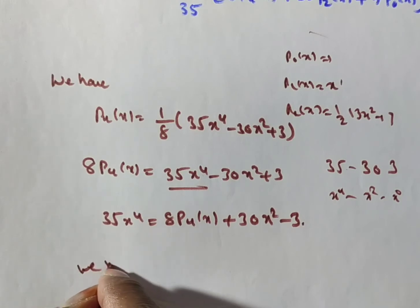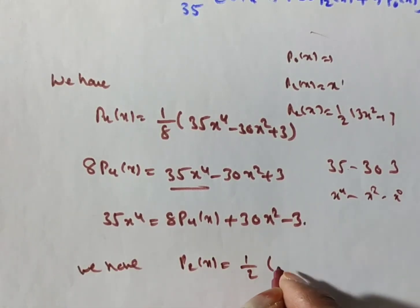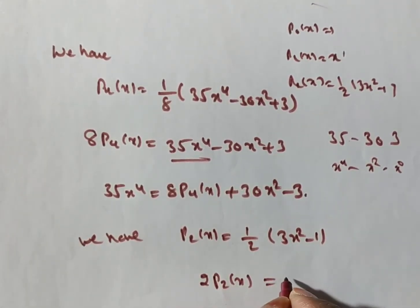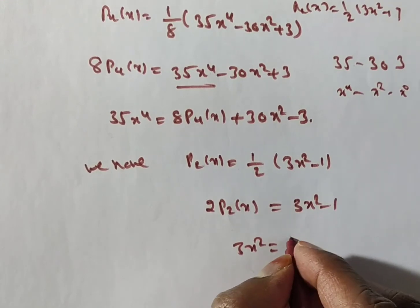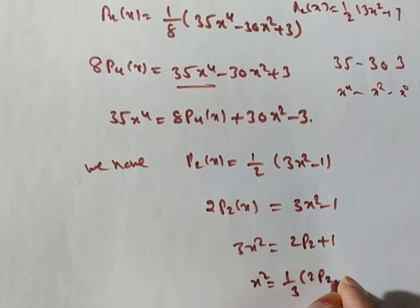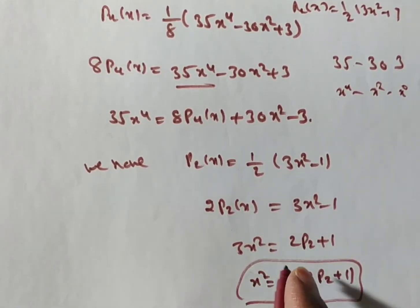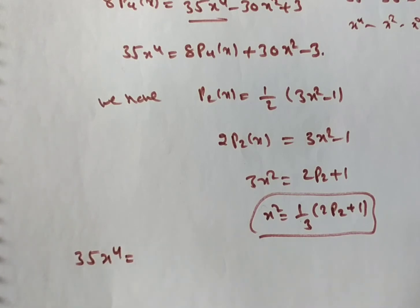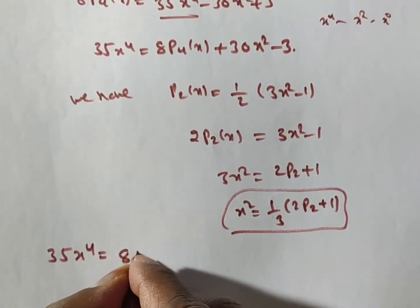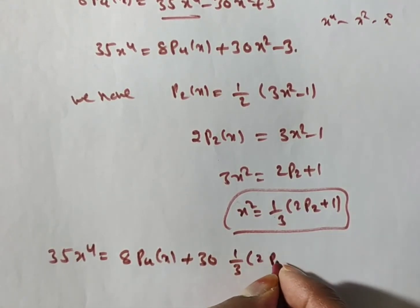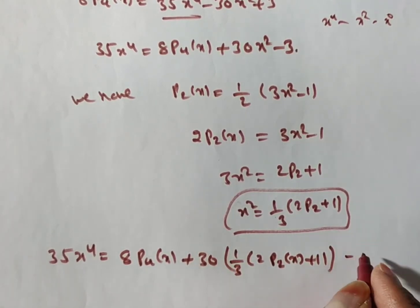Since x² appears, we need P₂(x). We have P₂(x) = (1/2)(3x² - 1), so 2P₂(x) = 3x² - 1, giving 3x² = 2P₂(x) + 1, and therefore x² = (1/3)(2P₂(x) + 1). Substituting into our equation: 35x⁴ = 8P₄(x) + 30 · (1/3)(2P₂(x) + 1) - 3.